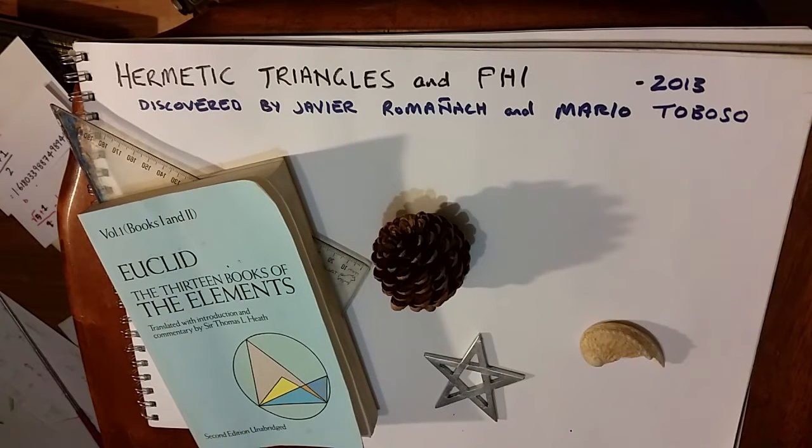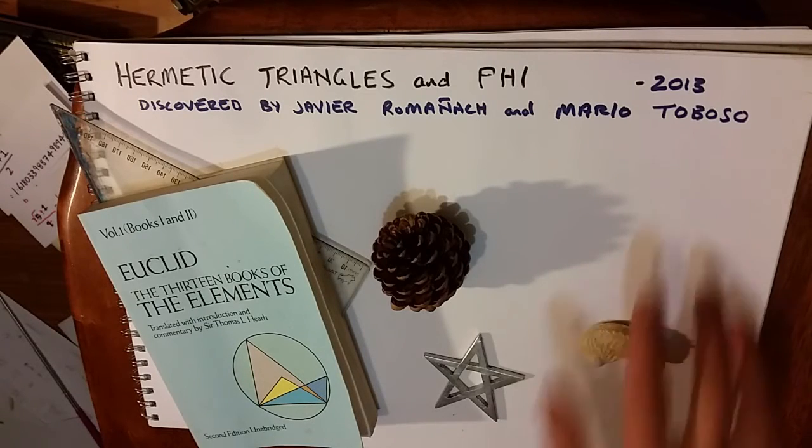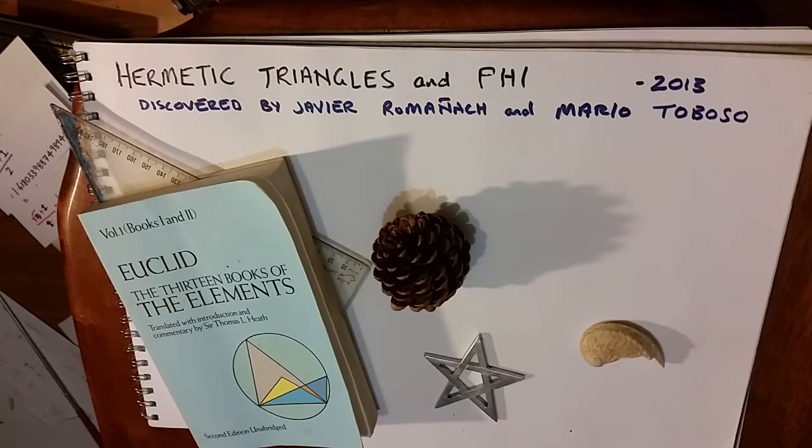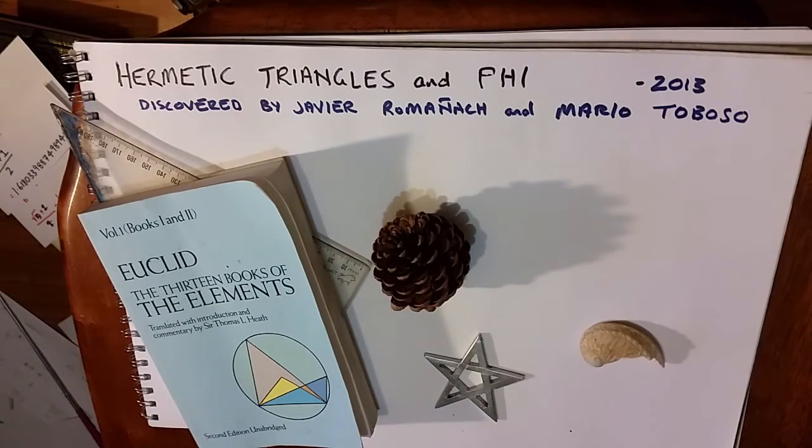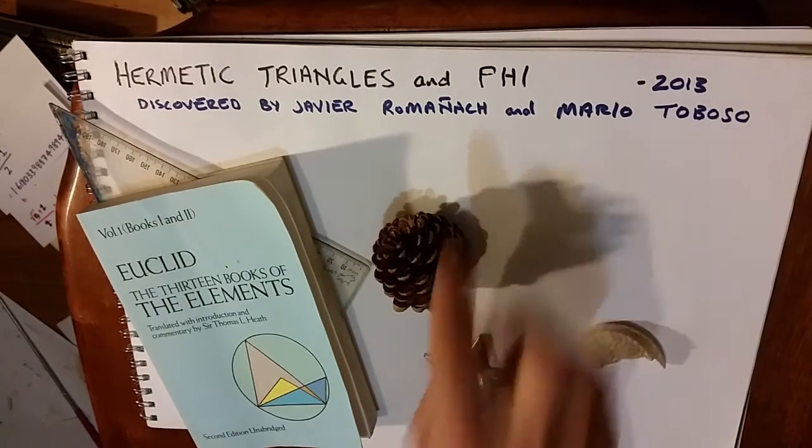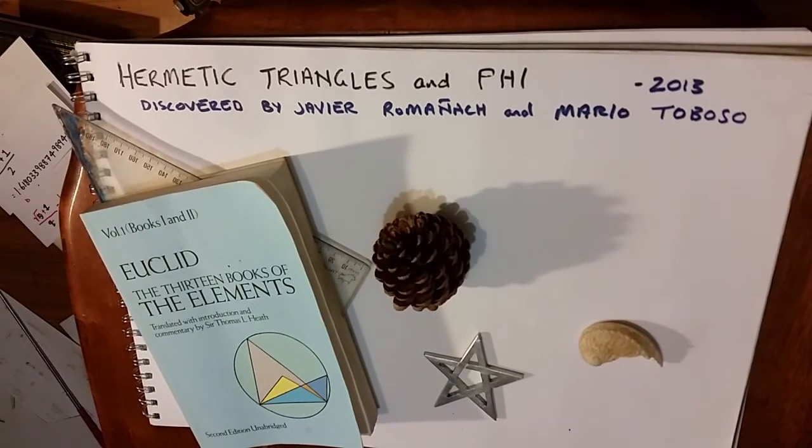I'm going to create what's called Hermetic Triangle. These are really cool and already discovered in 2013 by Javier Romañach and Mario Toboso. I'll include the link to Javier Romañach's series. There's something about phi. It's a great series, specifically episode 12 on Hermetic Triangles.